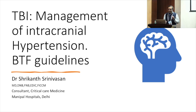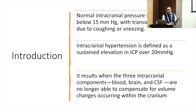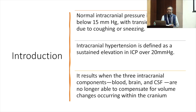To change the track here, I'll be talking about management of intracranial hypertension, especially the brain trauma foundation guidelines with respect to traumatic brain injury. Let's rapidly go through what we already know. The normal intracranial pressure is between 0 to 15. It can transiently rise because of coughing and sneezing, but if it's sustained over 20 millimetres of mercury, that's what we call raised ICP.